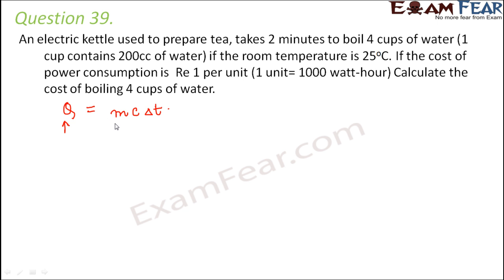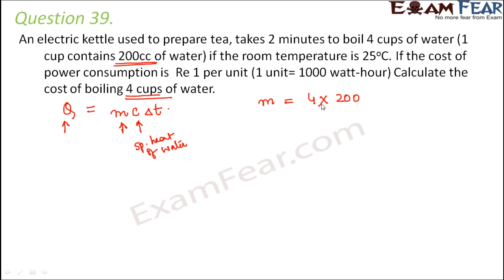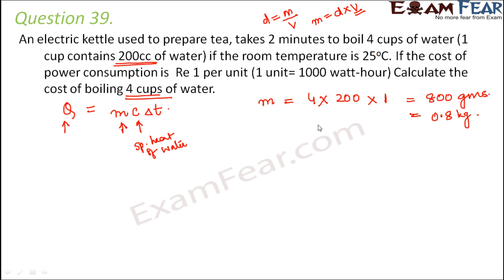In Q = mc∆T: Q is the heat absorbed, m is the mass of the substance being heated, and c is the specific heat. Since we are boiling 4 cups, the volume is 4 × 200 cc = 800 cc. Mass = density × volume = 800 cc × 1 g/cc = 800 g = 0.8 kg.